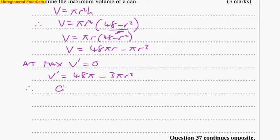So therefore, 0 equals that, because of the maximum being at gradient 0. And we just have to solve this. So if I just take 3πr² over to this side, it equals 48π.